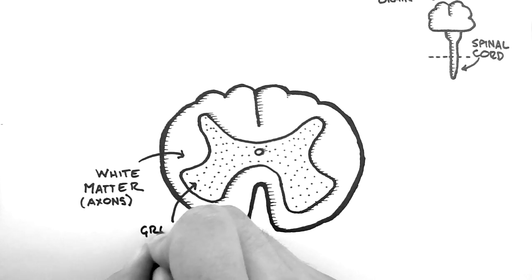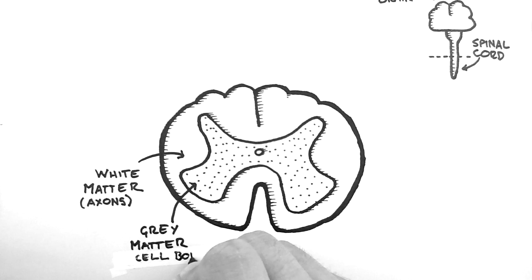The second is the grey matter, which is this central butterfly shaped area, which is where the cell bodies of the neurons reside.